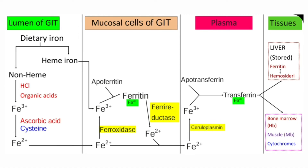Now we will see how iron is transported from the mucosal cells into the plasma. The iron liberated from ferritin of the mucosal cells is in the ferric state. This ferric iron is first converted into the ferrous form by ferroreductase. Iron then enters the plasma in the ferrous state via a transporter protein called ferroportin, but this transportation takes place only when there is free transferrin in the plasma for iron to bind. In the plasma, iron in the ferrous state is oxidized back to the ferric state by a copper-containing protein called ceruloplasmin, which has ferroxidase activity.